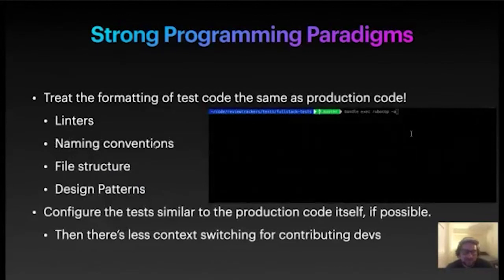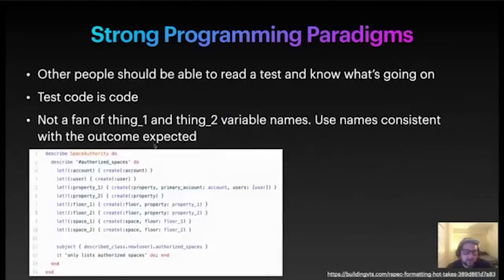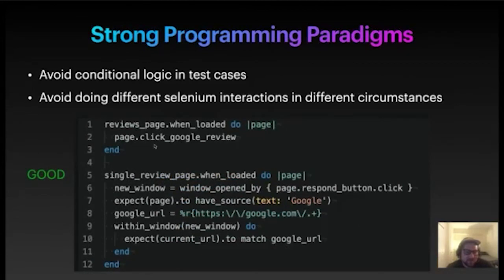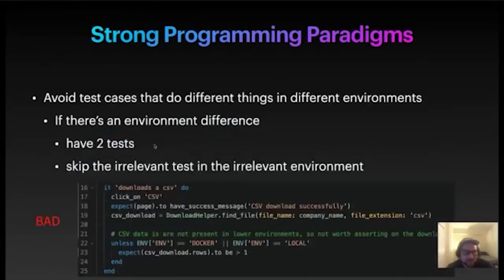I would suggest you configure the tests similar to the production code itself if possible, so that there's less context switching for the developer who's contributing to the tests. Context switching reduces productivity — so if you've got JavaScript production code, make the tests written in JavaScript, et cetera, and use the same file structure. Other people should be able to read a test and know what's going on. Avoid conditional logic in your test cases. I would posit that instead of doing a test case that handles city search on Google and Facebook and Yelp all in one test, do it like this: the test knows it's handling a Google review and is only asserting about that Google review. Conditional logic in test cases makes them harder to interpret and harder to follow the flow.